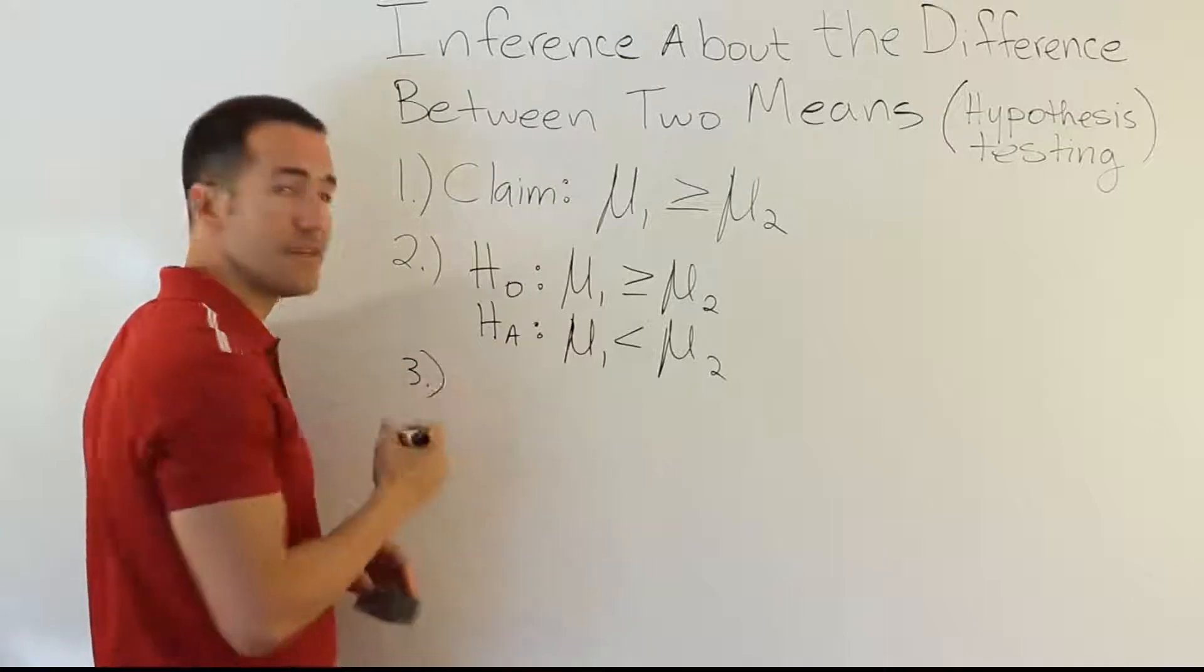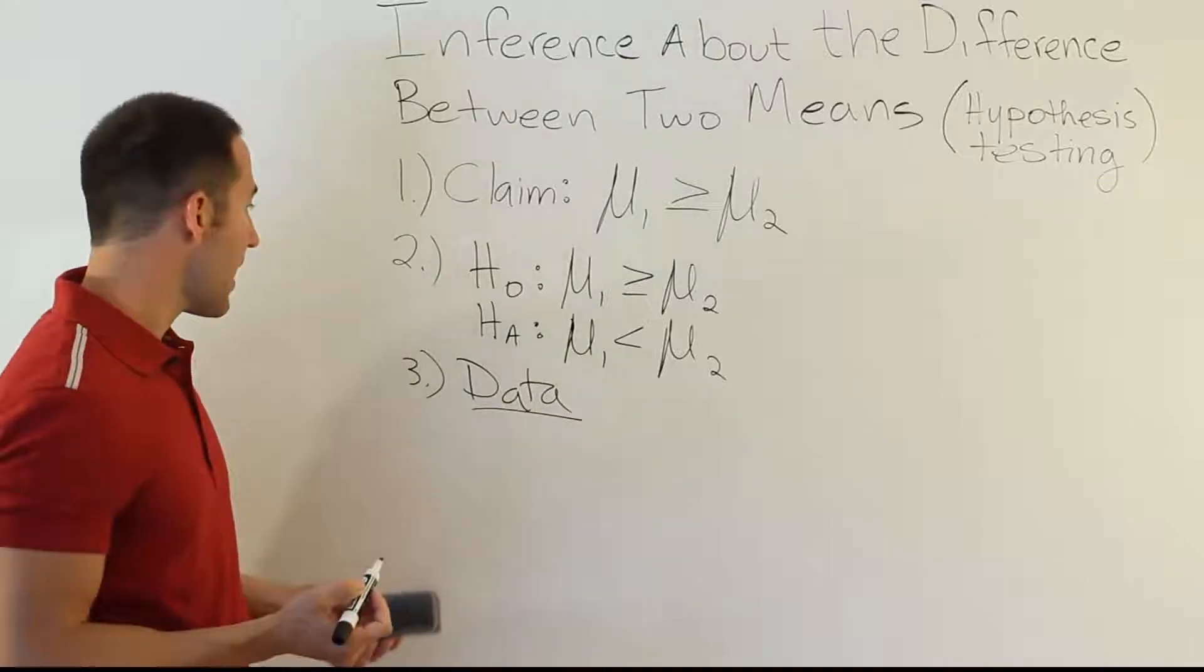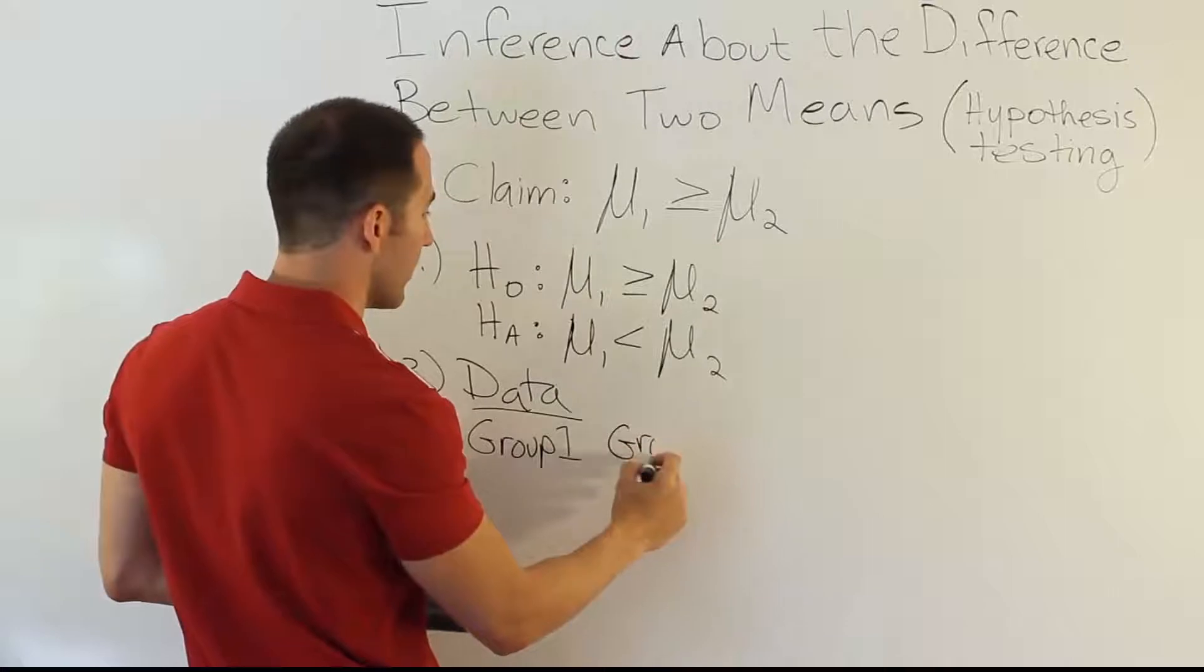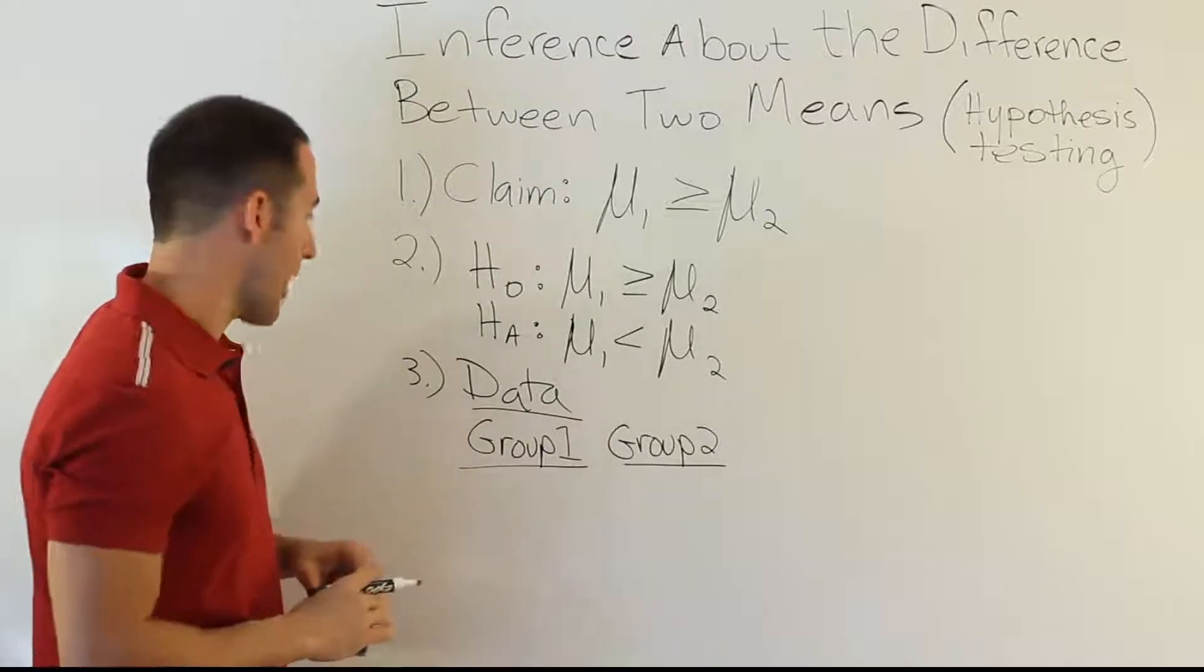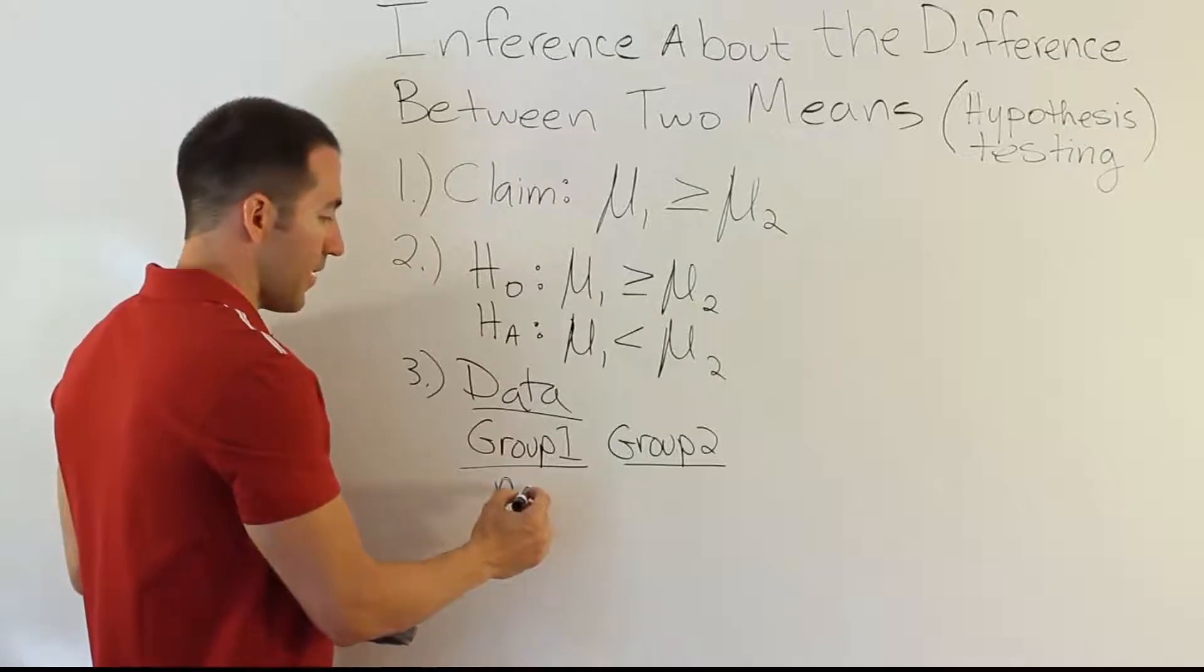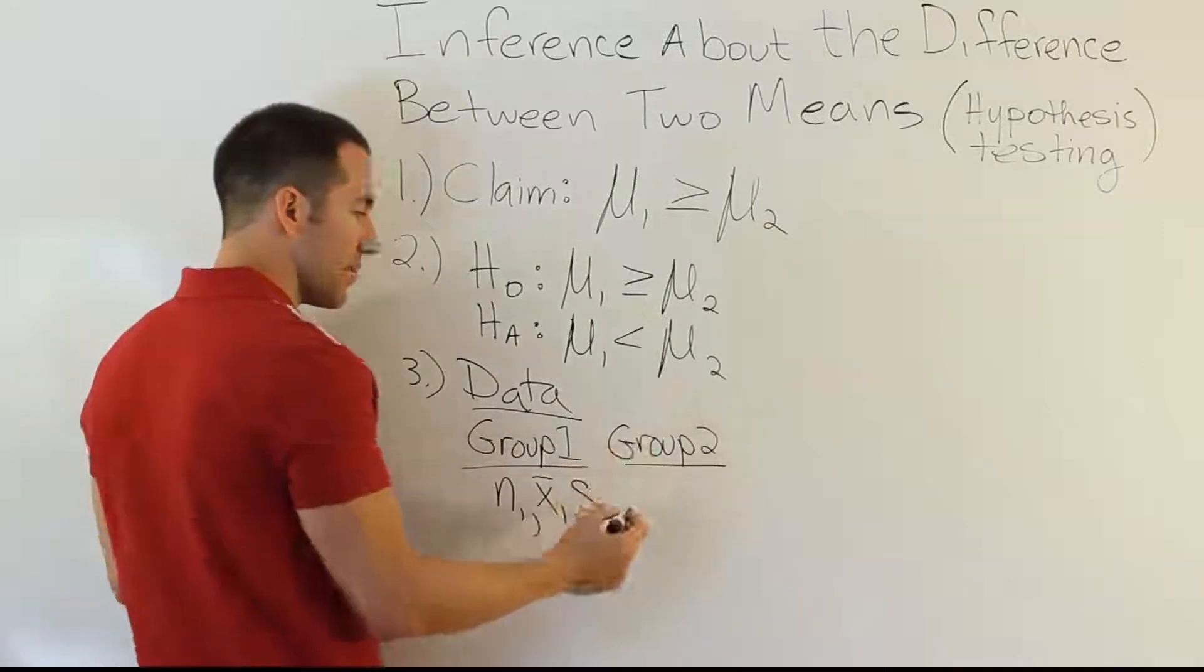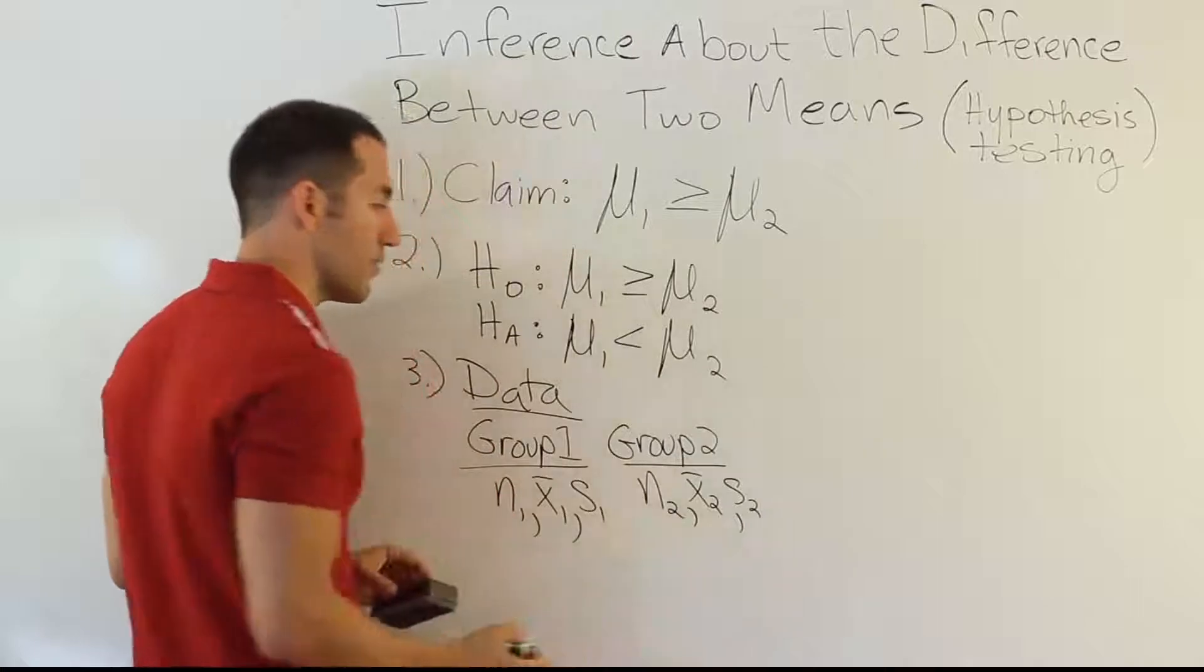Alright, step three was always for us getting the data. Well, we still do the same thing here, and the only difference is that for the data step now, we actually have two little groups of data. So we have kind of group one or population one, and we have group two. So this is kind of the big difference here between the procedure that we're using now and what we're using in the past, but we have two sets of data. So we'll have an N for this group, we will have an X bar for this group, we will have a standard deviation for this group. So N1, X bar 1, S1, and we'll have the same thing for group two, it'll be N2, X bar 2, S2. So we have those three quantities for group two as well.